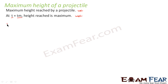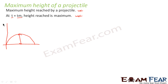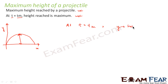Let us suppose this is the projectile. This is the maximum height reached by the projectile. Now we want to find out an expression for this height. This height is nothing but the change in position, or the distance travelled along the y-axis. That means at t equal to t_m, the value of y should represent the maximum height.